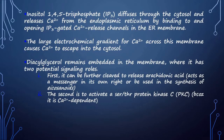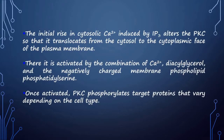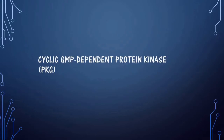The mechanism of action is described in detail: the initial rise in cytosolic calcium induced by IP3 alters PKC so that it translocates from the cytosol to the cytoplasmic face of the plasma membrane, where it is activated by combination with calcium, diacylglycerol, and phospholipid phosphatidylserine. Once activated, PKC phosphorylates target proteins that vary depending on the cell type.